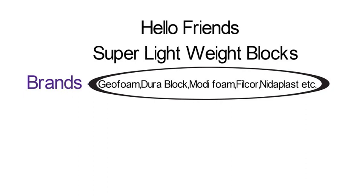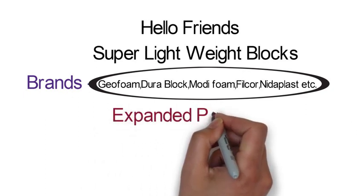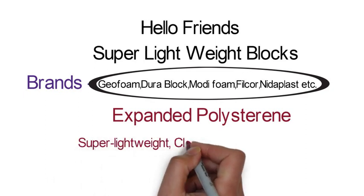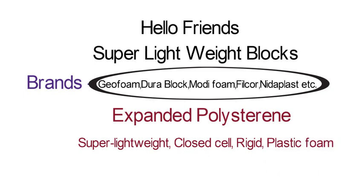The basic material in these lightweight blocks is Expanded Polystyrene. EPS is a super lightweight, closed cell, rigid plastic foam. EPS is approximately 1% the weight of soil and less than 10% the weight of other lightweight fill alternatives. As a lightweight fill, EPS reduces the loads imposed on adjacent and underlying soils and structures.